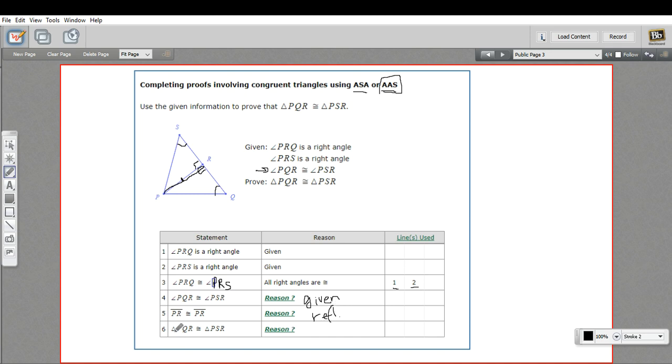And then finally, we can say that triangle PQR is congruent to triangle PSR. And we had an angle, an angle, and then a side. So this is going to be angle, angle, side property of triangle congruence. We would refer back to three and to four and to five. Those are the three parts that give us the angle, the angle, and the side. So I'm just going to put that in here in case they want it.